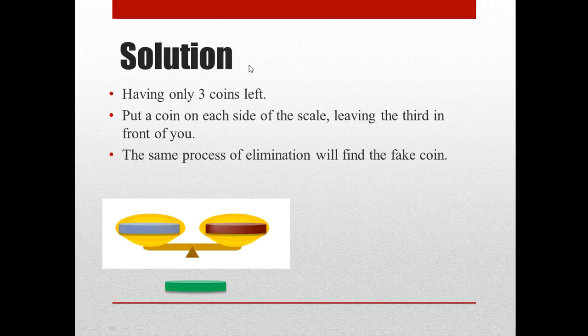In the second step, when we have identified the pile containing the fake coin, we are left with 3 coins. So, we place any of the 2 coins from this pile on the weighing balance. If the scale is balanced, it means that the third coin is the fake one.